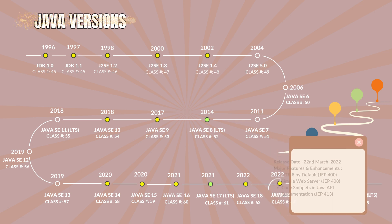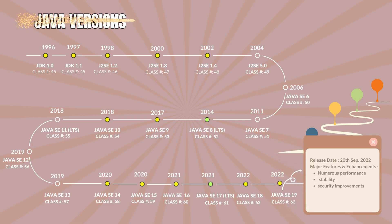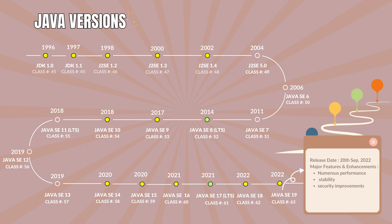Java 19.0 with the class file version 63. It was released on 20th September 2022. The major features and enhancements are numerous performance, stability, and security improvements.